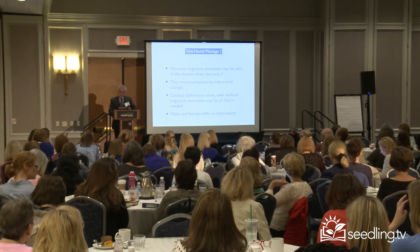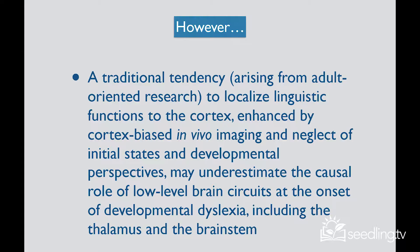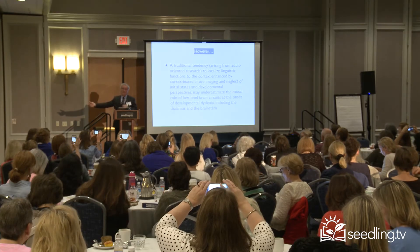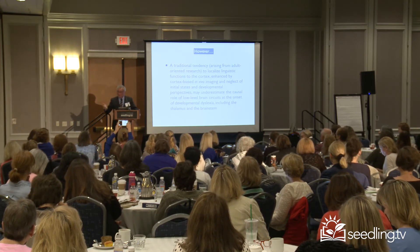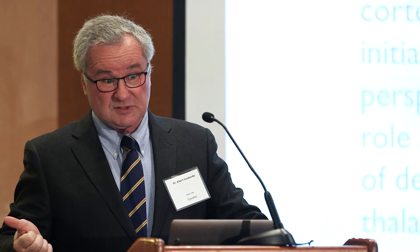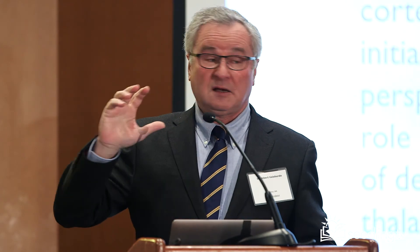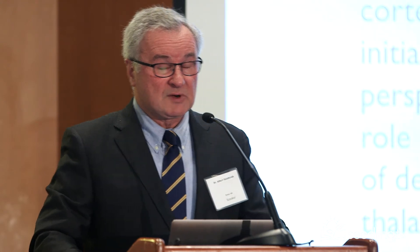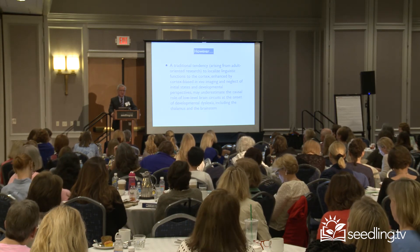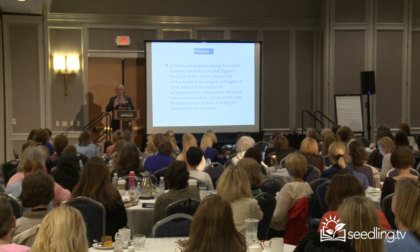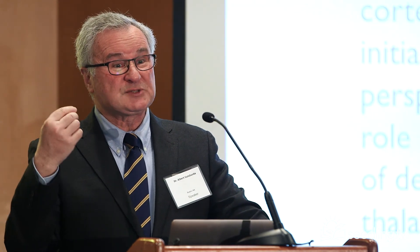The male and female difference in vulnerability is at least in part explained by sex hormones like testosterone. We have focused very much on the cerebral cortex because it's easy to see — it's like looking for the key under the light. We look in the cortex a lot when studying reading because it's easy to work with, unlike the thalamus or the brainstem in living subjects. The cortex is important for reading, but for learning to read, subcortical structures like the thalamus and brainstem may be even more important because they may be involved in the acquisition of the sound structure of language.